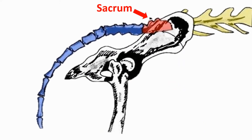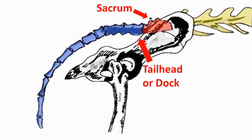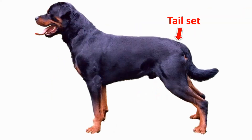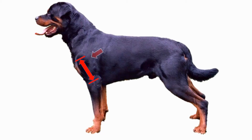The tail head of the dog is the beginning of the tail. Tail set — the tail set is the point at which the tail comes out of the dog's body, and the tail is right here. The upper arm is right below the shoulder and consists of the humerus bone.